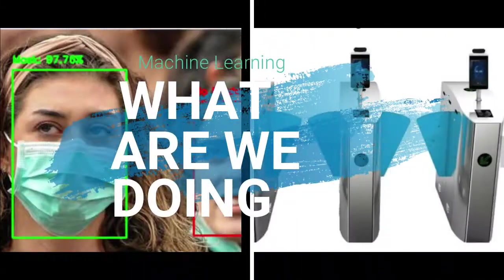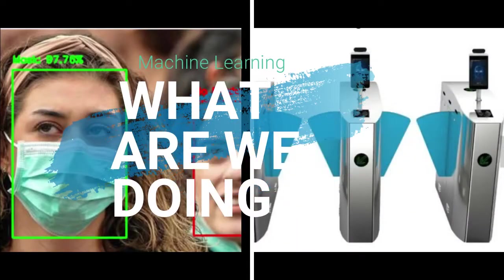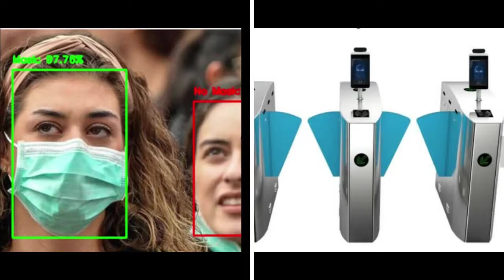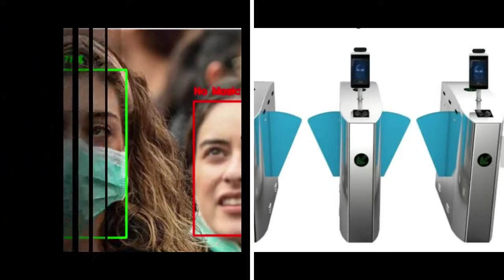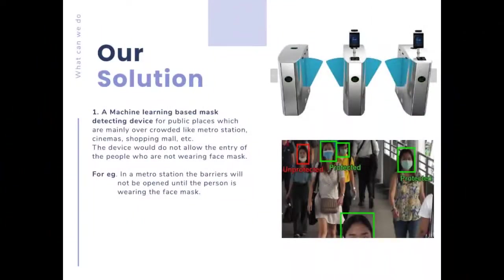We are delighted to present our machine learning based mask detector for public places. If a person will not wear a mask, he or she would not be allowed to enter, else he can go easily. Our device can be implemented in metro stations, cinema halls, shopping malls, and many other public places.